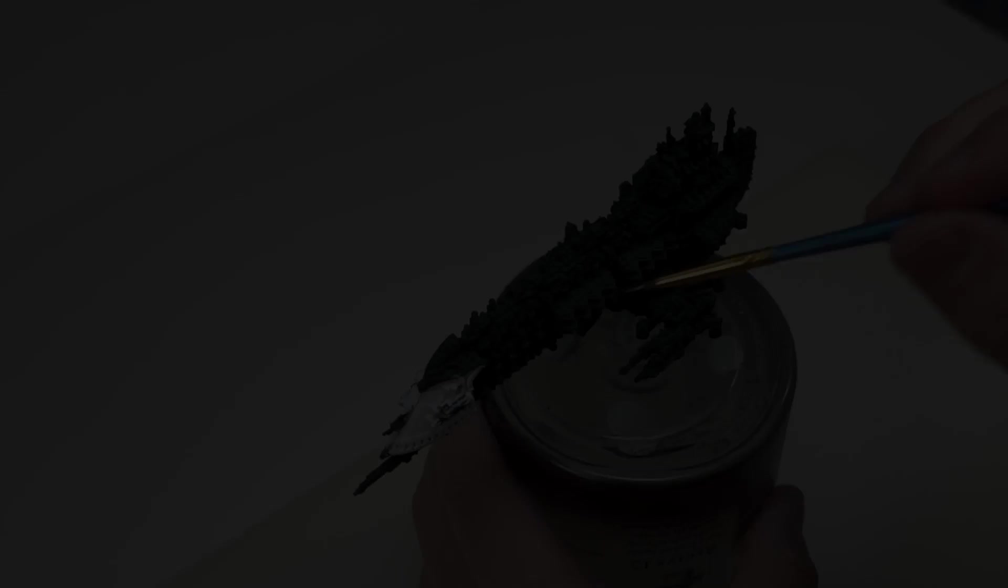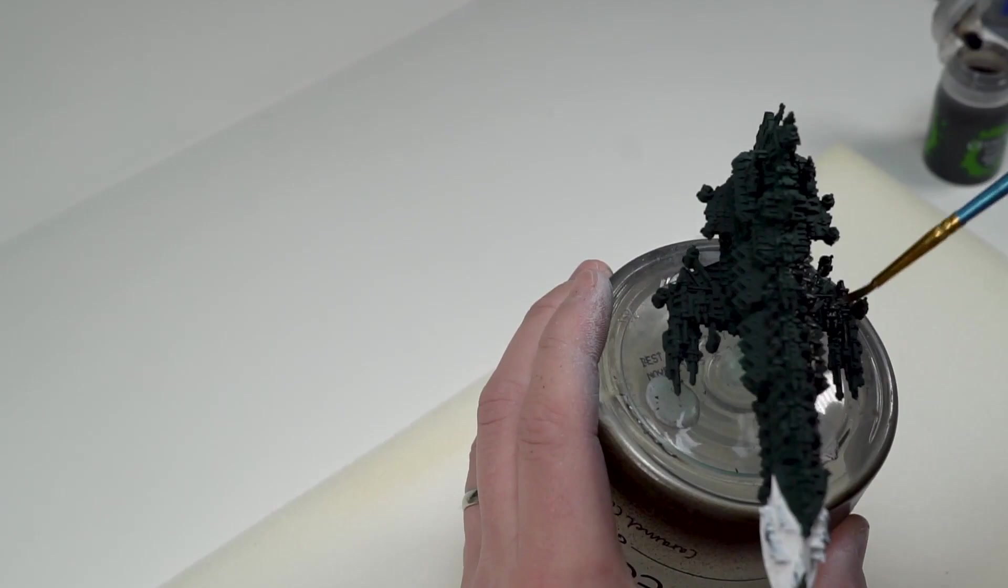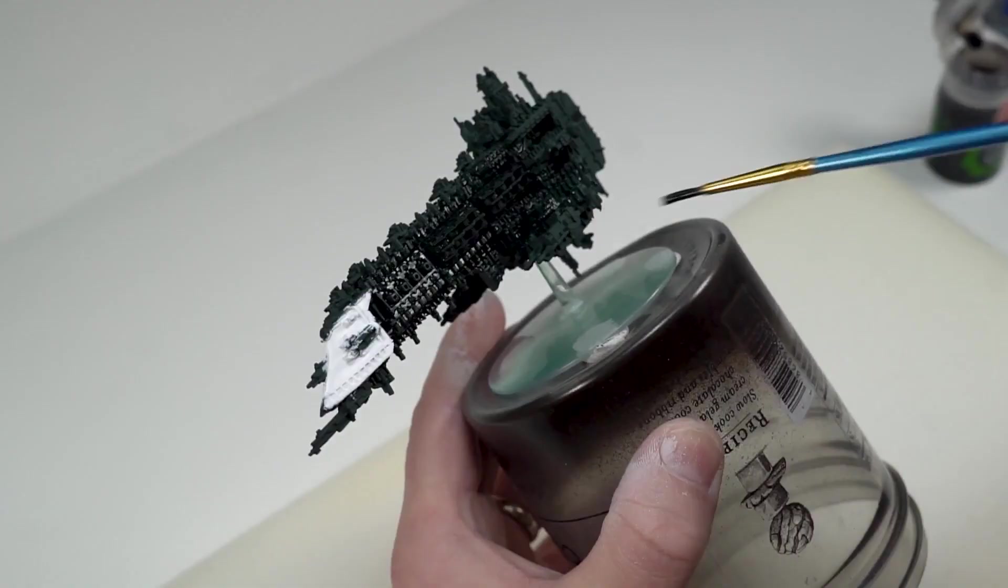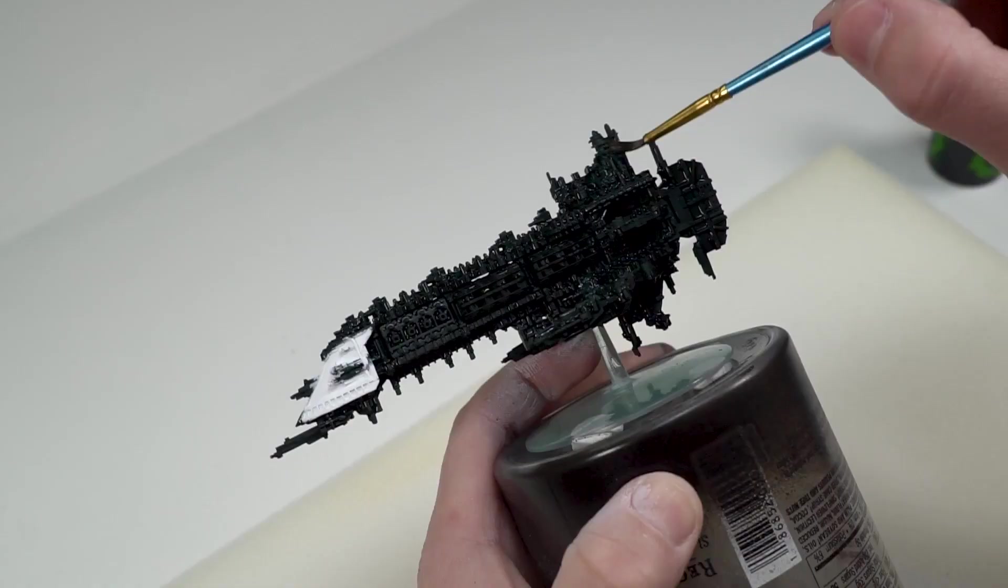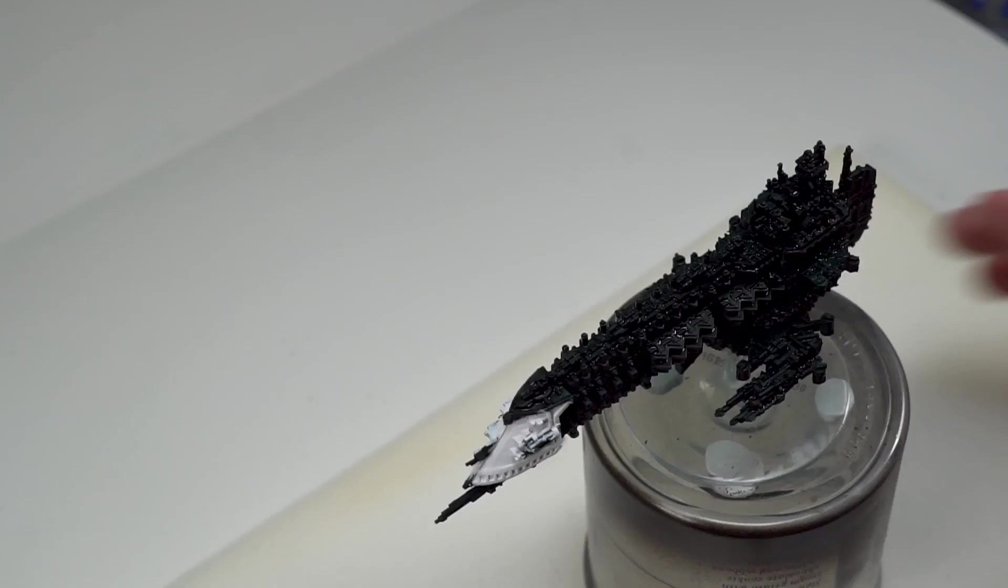Now onto the easiest part of the entire process, just adding a wash or a shade. And I'm using here, of course, the classic Nuln Oil. I managed to not spill the pot in this entire process, which is a miracle. I recommend just using the cheapest brush you can find, but make sure that you don't let too much of the paint pool in the crevices because you want to keep as much of the detail as possible to just keep the Nuln Oil moving around for as long as possible until you have it in the exact places that you need to have it.